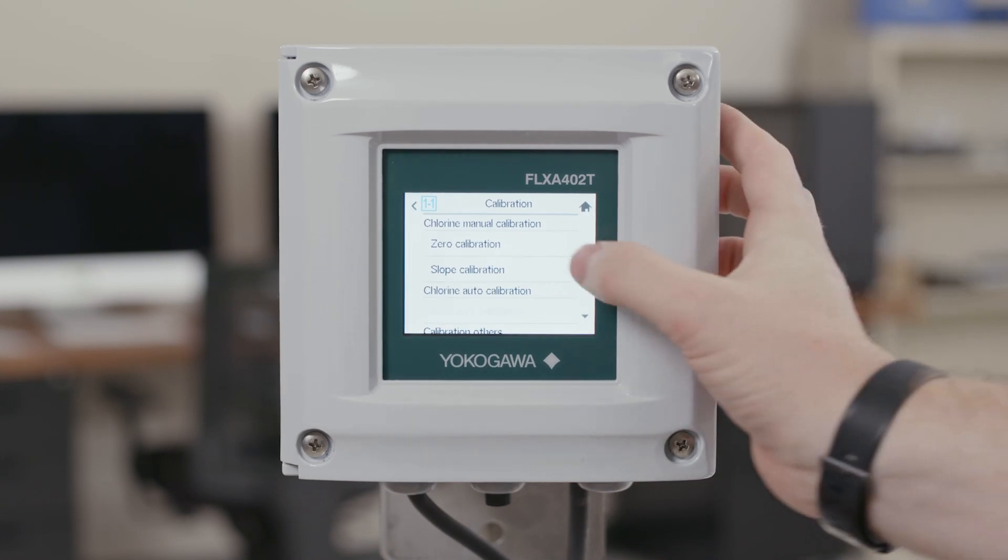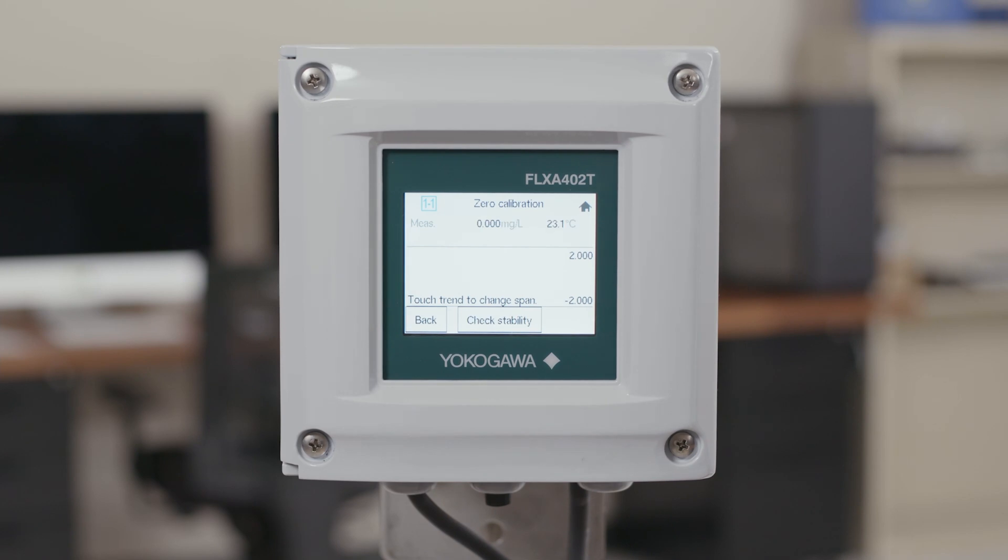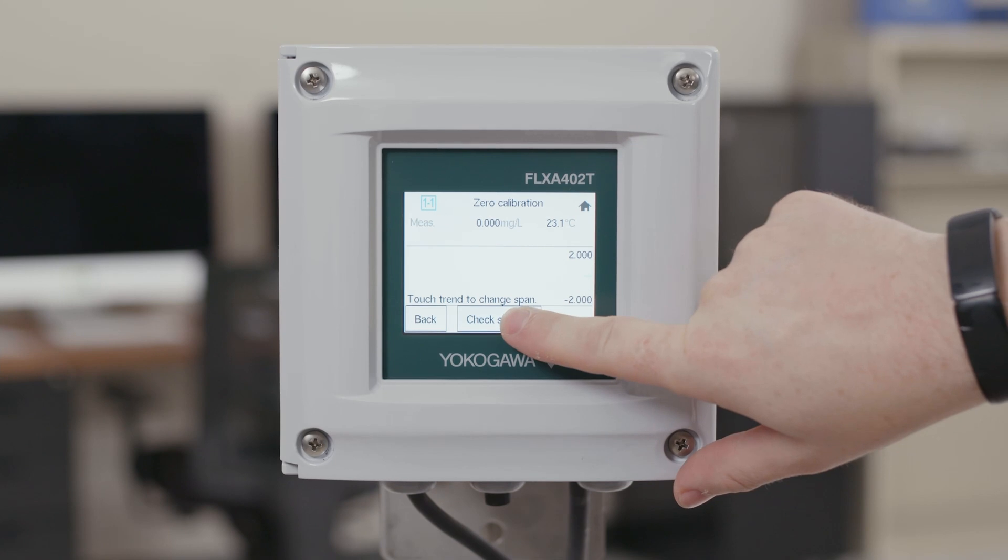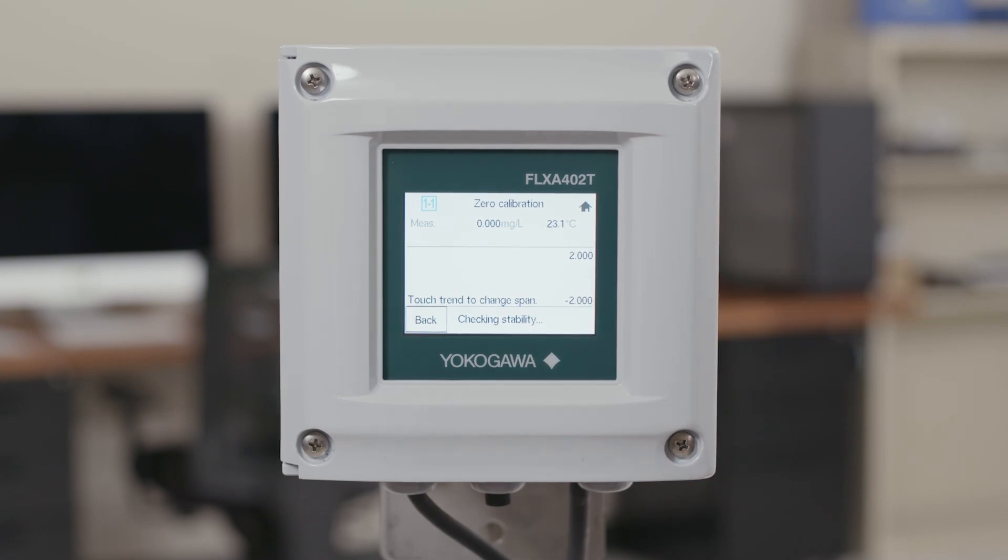From here you will select your zero calibration. This will make a screen appear that shows your current measurement as well as a back button and a check stability button. Once your reading on your measurement section has stabilized, go ahead and click the check stability button. This will allow the analyzer to measure stability and make sure that the reading is actually stable. Once it is stable, a button that says next will appear.